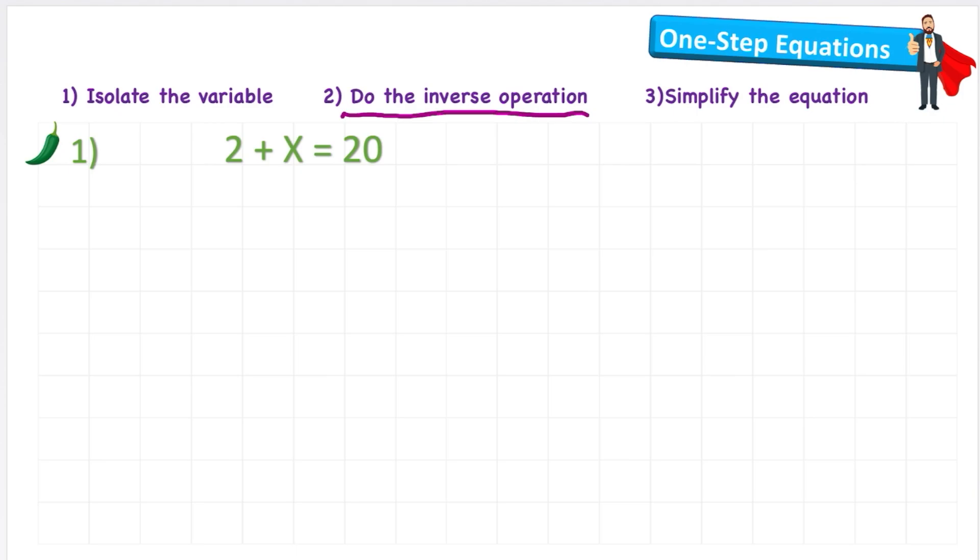Okay so looking at this first question we have 2 plus x equals 20. Now something very important to understand with equations is that we must keep both sides of the equal sign balanced. That is a very important rule of equations and we must do that at all times all the way through solving this question.